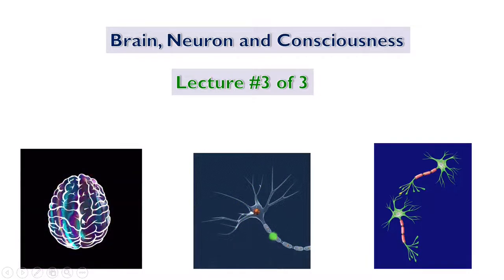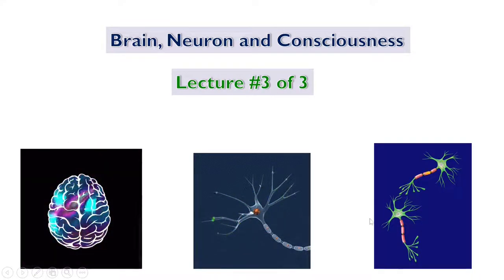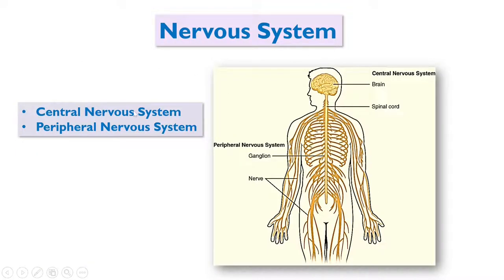Here I show brain activities, neurons, the axon, and how the action potential propagates and goes through synapses. Two neurons can talk through synapses. The nervous system has two parts: the central nervous system and the peripheral nervous system. The central nervous system consists of the brain and spinal cord, while the peripheral nervous system includes ganglia and nerve fibers that communicate with the brain through the spinal cord.